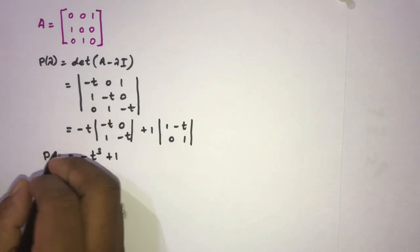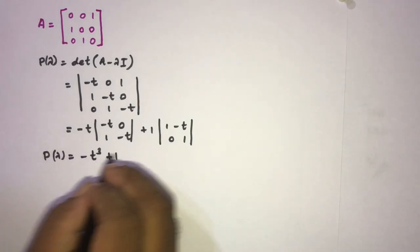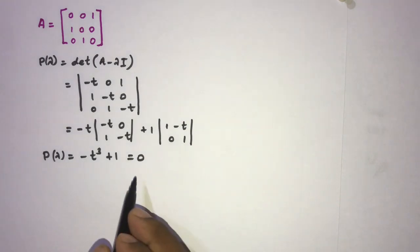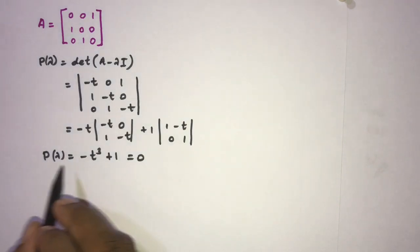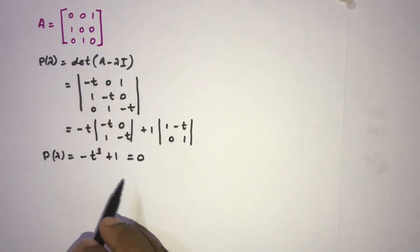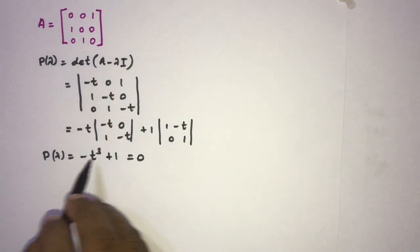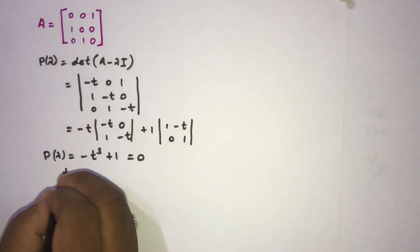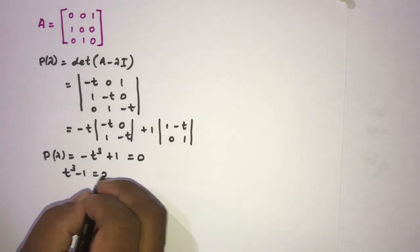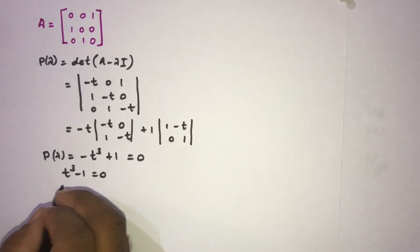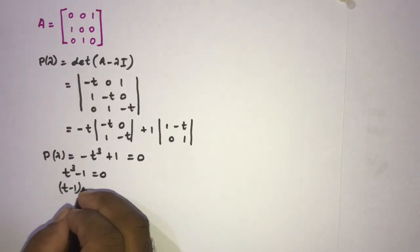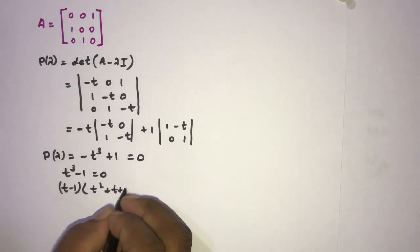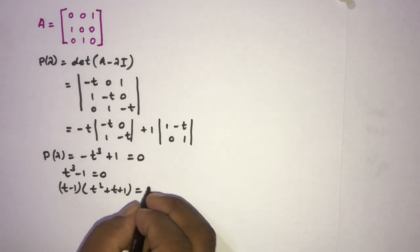Now we find the eigenvalues by setting P(λ) equal to zero. So we need to solve t³ minus 1 equals zero. We factor this as (t minus 1)(t² plus t plus 1) equals zero.